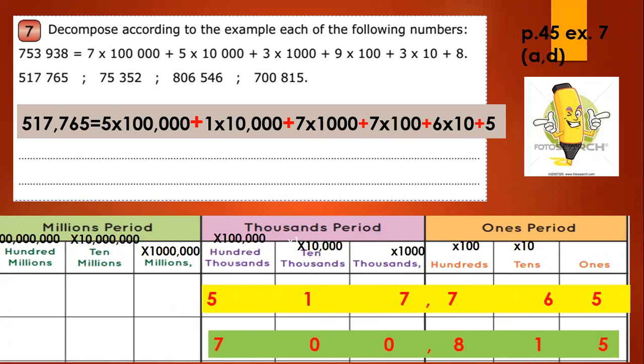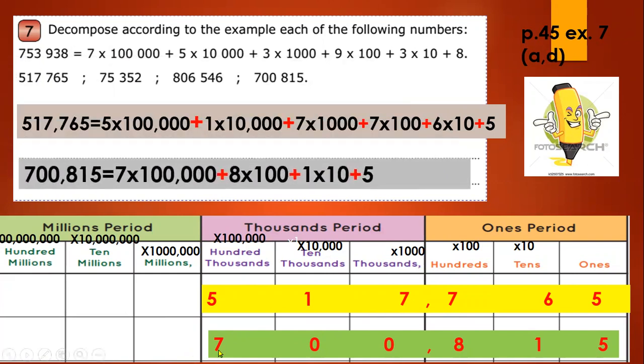This is D. Here I have 700,815, so how can I write this number in expanded form? 7 times 100,000, plus, there is no 10,000, and there is no 1,000, so no need to write 0, 0. I can move directly to 800. So plus 8 times 100 plus 1 times 10 plus 5.